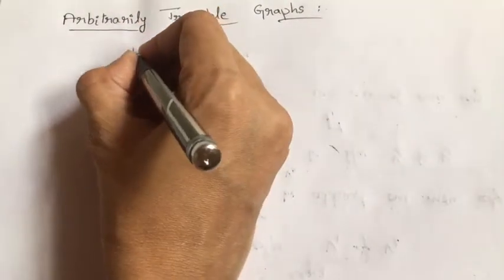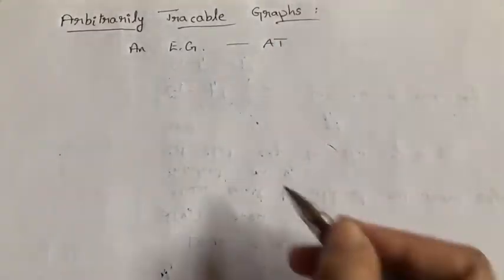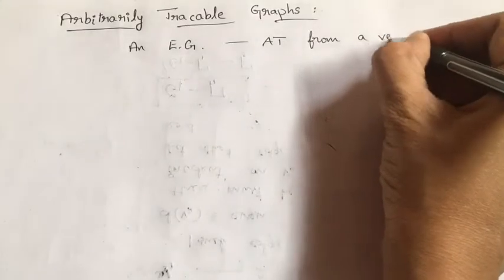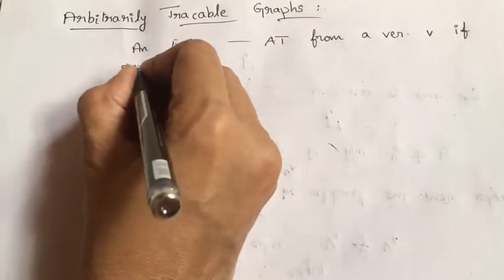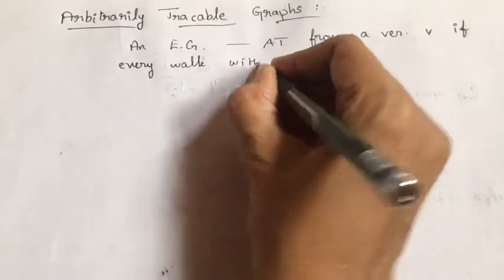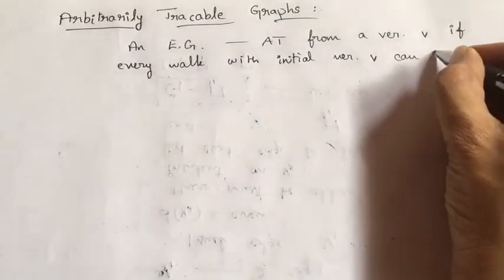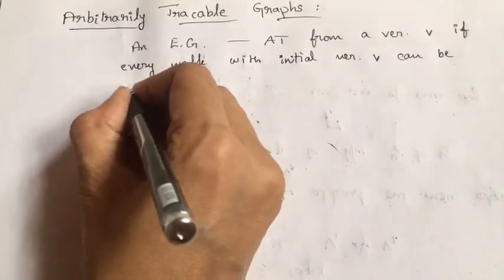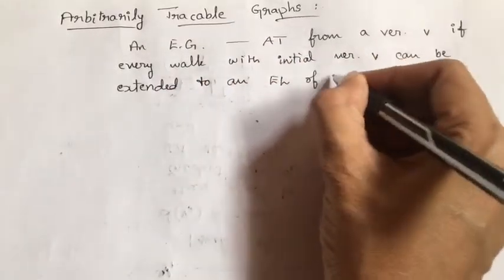Next, one more type of graph: arbitrarily traceable graphs. An Euler graph is said to be arbitrarily traceable from a vertex V if every walk with initial vertex V can be extended to form an Euler line of graph G.